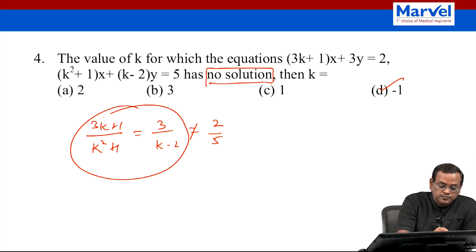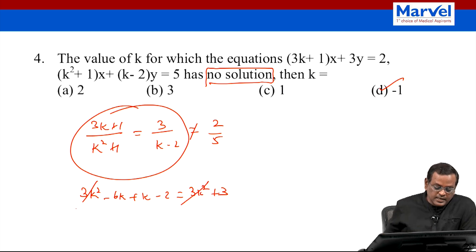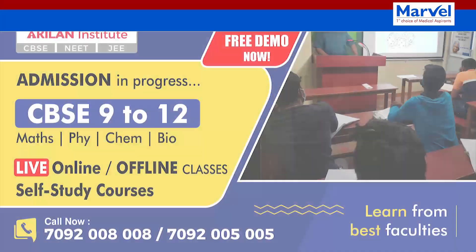Equating the two: 3k² - 6k + k - 2 = 3k² + 3. The 3k² terms cancel, giving -5k = 3 + 2 = 5, so k = -1.